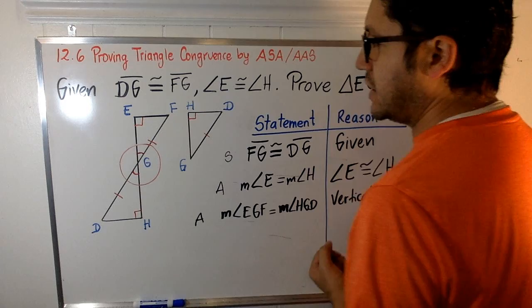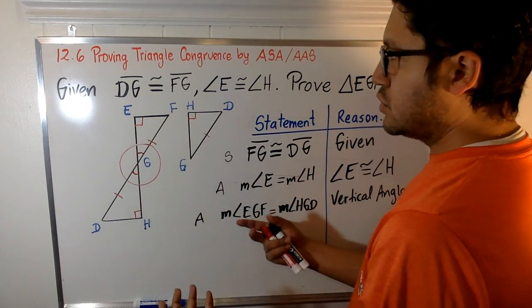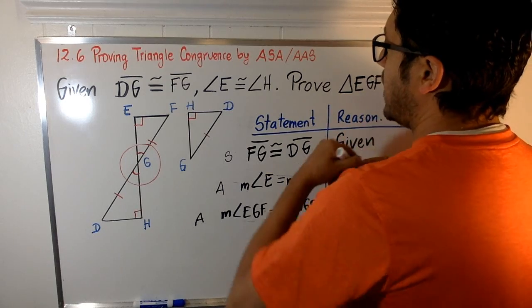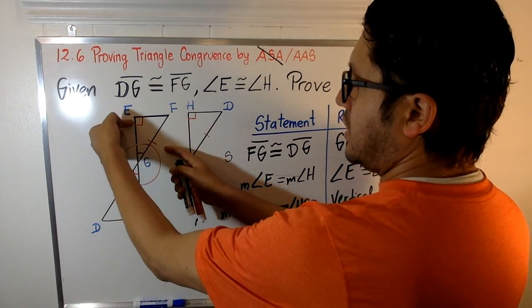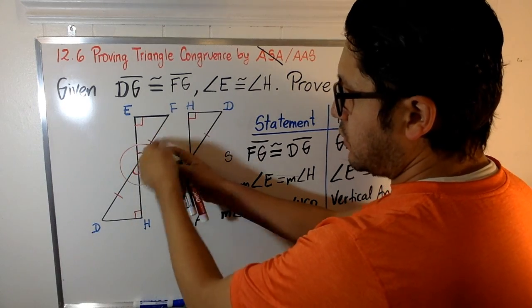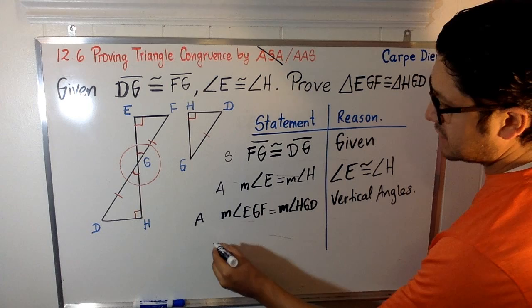Let's see how the order goes here. Is the segment in between the angles? No. So it's not going to be A, S, A. Instead, it's going to be, look at this, angle, angle, and right immediately we have the side or the segment. So I can state this.